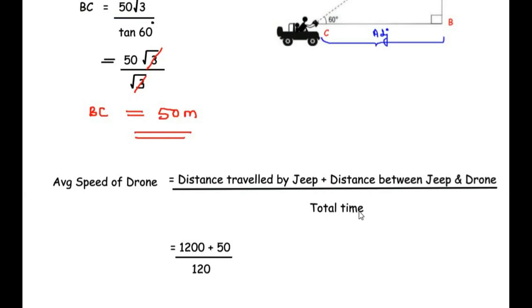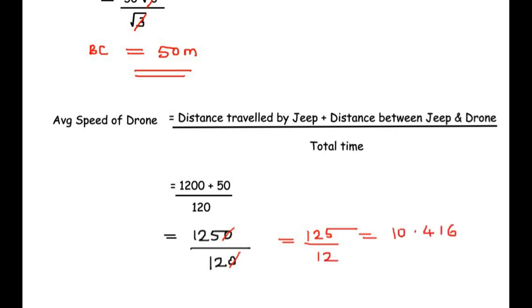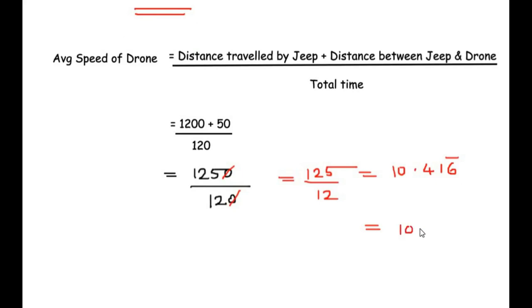Substituting into the main formula: distance traveled by jeep = 1200 meters, distance between jeep and drone = 50 meters. Total distance = 1200 + 50 = 1250 meters. Total time = 2 minutes = 120 seconds. Average speed = 1250 / 120 = 125 / 12 = 10.4166... recurring. Rounded to two decimal places — since 6 > 5, we add 1 to the previous digit — giving 10.42 meters per second. That is the average speed of the drone.